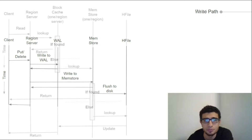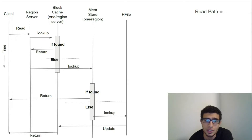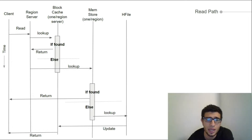For the read path, the client sends a request to HBase to read. The client finds the region and the region server that manages it, as explained before. Once the region is found, first a lookup in the region server's block cache is done and returns immediately if the data is found there. If not, the search goes down to the memstore, and if found it is returned. Otherwise, it goes one step further to the HFile. Once the data is found there, it is written back into the block cache and the result is returned to the client.